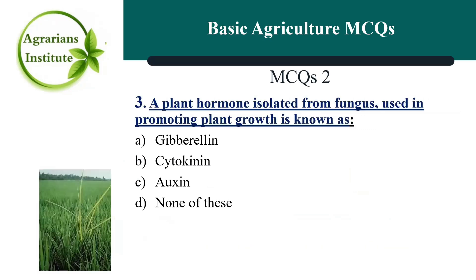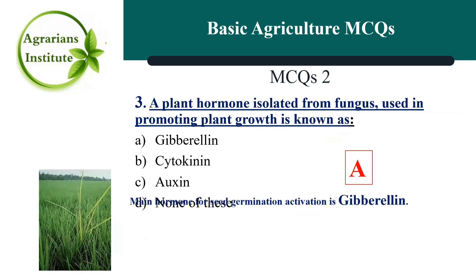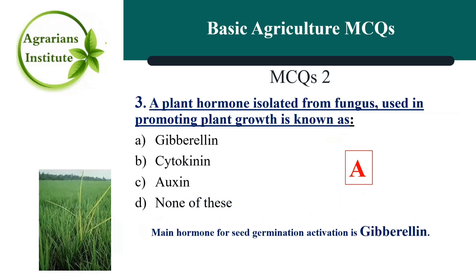Third MCQ: A plant hormone isolated from fungus and used in promoting plant growth is known as — the correct answer is A, Gibberellin. The main hormone for seed germination activation is also Gibberellin.